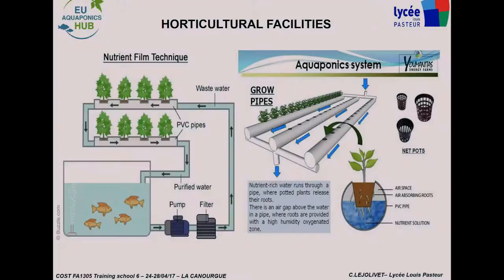NFT — Nutrient Film Technology — a fine blade of water is created around the roots, which are also in the air, so without risk of anoxia. But be careful: if the pump breaks, you can lose all the crops.